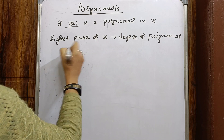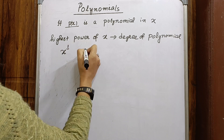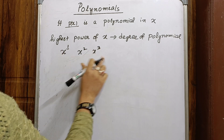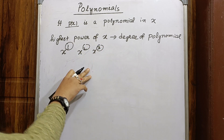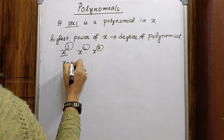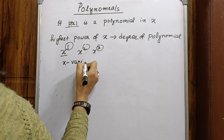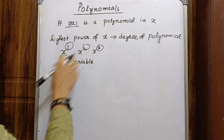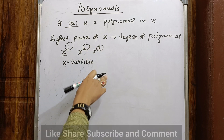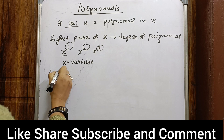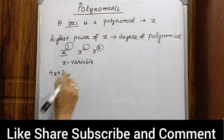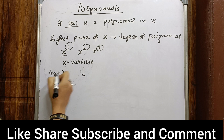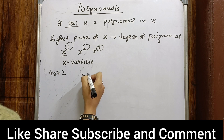The highest power of x means x raised to a power like 1, 2, or 3. The highest power of x is called the degree of the polynomial in that quadratic expression, and x is called the variable. For example, in the expression 4x + 2, the highest degree is the highest power of x, which is 1. So the degree of the polynomial is 1.